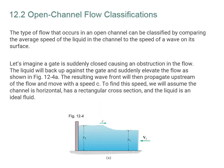The type of flow in an open channel can be classified by comparing the average speed of the liquid to the speed of a wave on its surface. Imagine a liquid flowing from right to left, and we place an obstacle in the flow — for example, we close a gate. The liquid will suddenly back up against the gate and elevate the flow. The resulting wave front will then propagate back upstream to the right, moving with a speed C. Our goal is to find this speed.